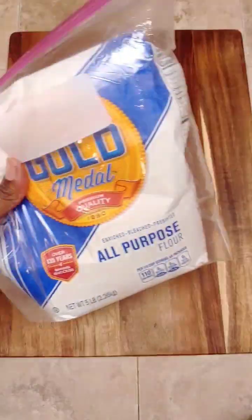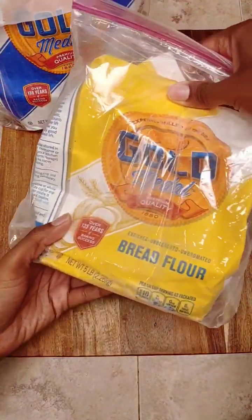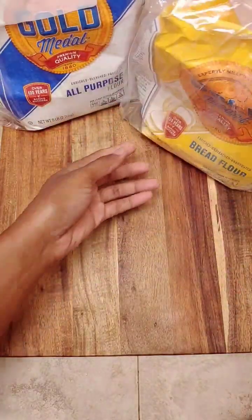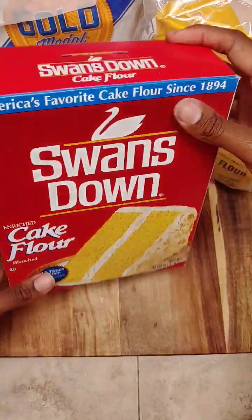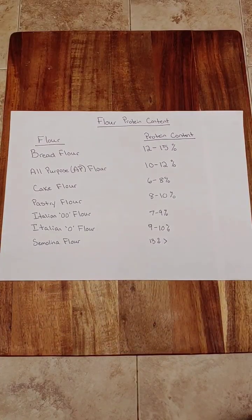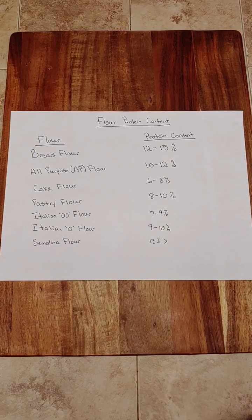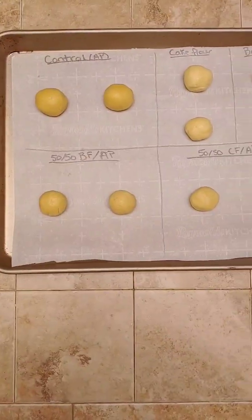There are three main types of flour used in baking: bread flour, or BF flour, all-purpose flour, or AP flour, and cake flour. Bread flour has the highest protein content of 12 to 15%, followed by all-purpose flour at 10 to 12%, and then cake flour at 6 to 8%.